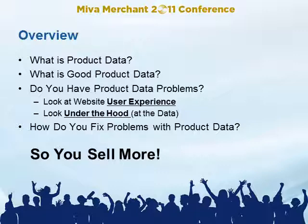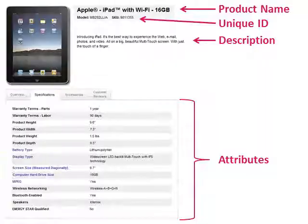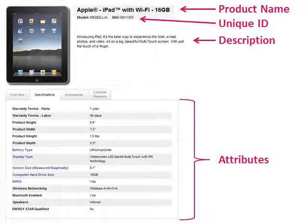To start off, what is product data? These are the basic elements of product data: a name or title, a model number, SKU or UPC, a description or details, and specifications or attributes of your products.